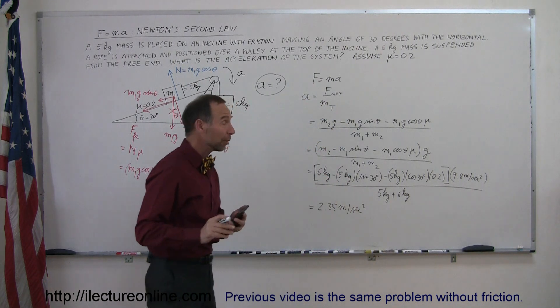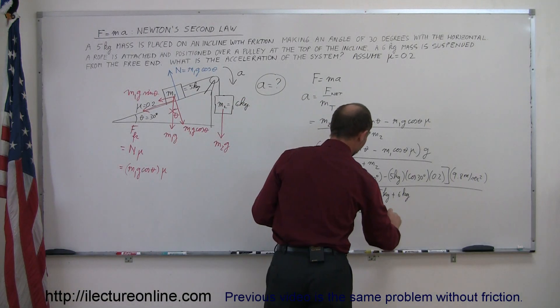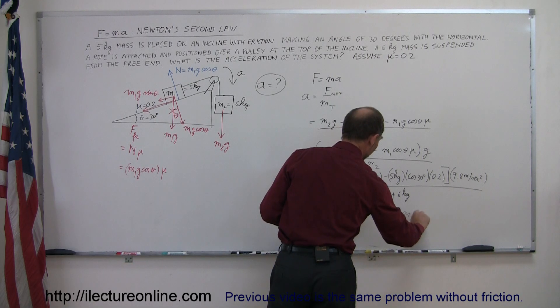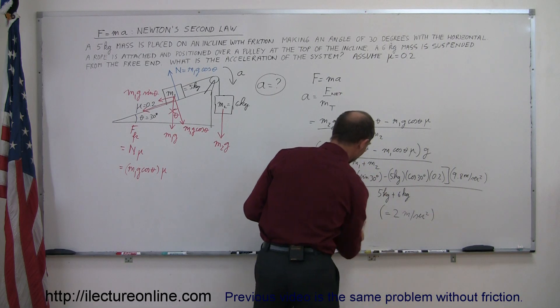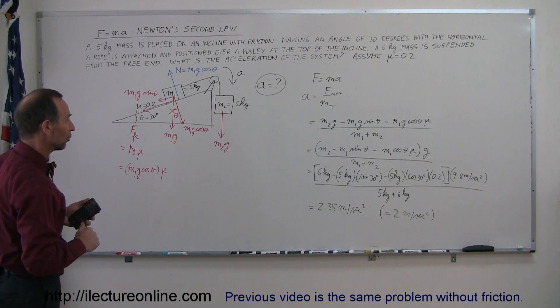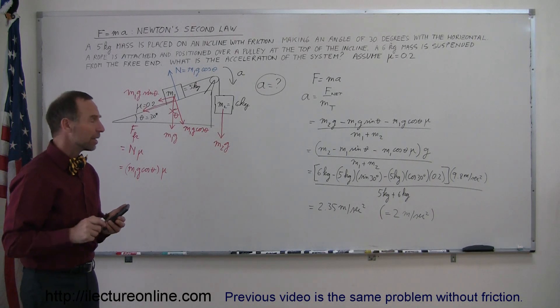Since we only had the numbers available to one significant figure, we should round this off to one significant figure. So we should say 2 meters per second squared. But at least you can see that that would be the correct answer if you were given the values of the masses to a greater number of significant figures.